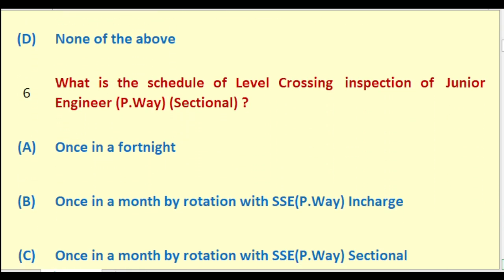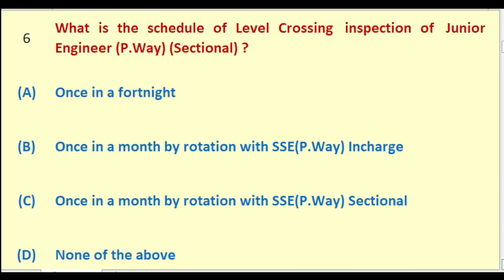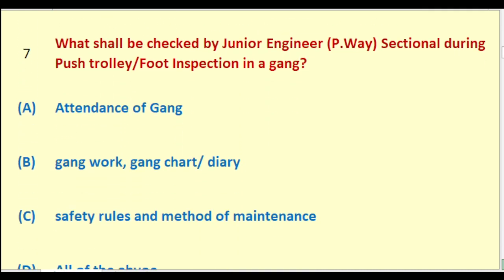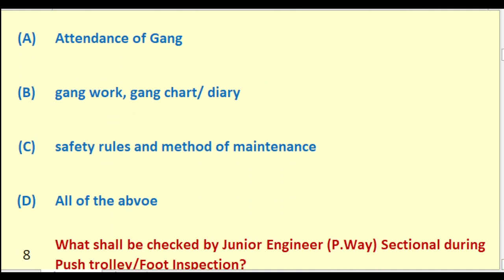What is the schedule of level crossing inspection of Junior Engineer Permanent Way Sectional? Options: once in a fortnight; once in a month by rotation with SSE Permanent Way in charge; once in a month by rotation with SSE Permanent Way Sectional; none of the above. The right answer is: once in a month by rotation with SSE Permanent Way in charge.